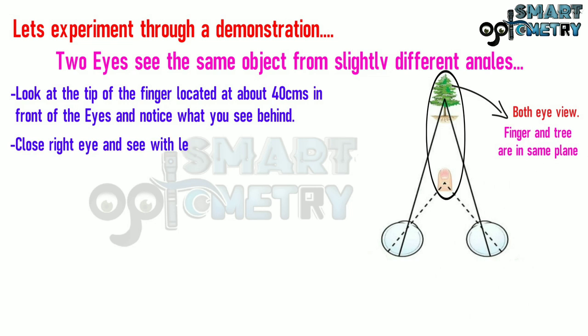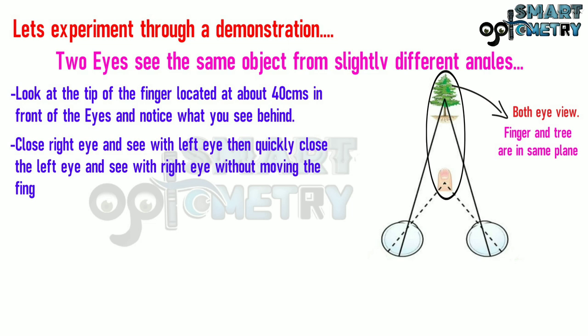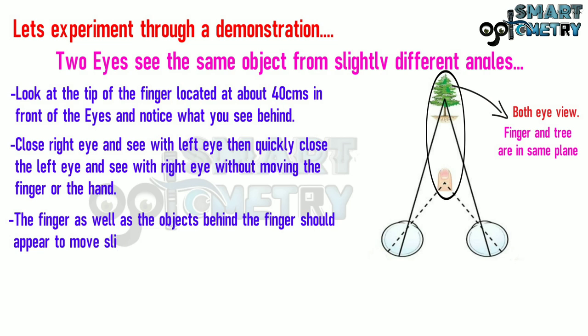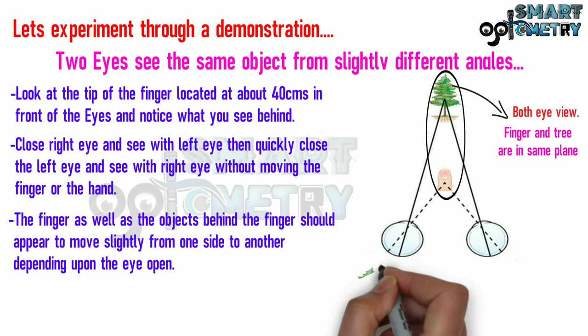Close your right eye and see with the left eye, then quickly close the left eye and see with the right eye. Without moving the finger or the hand, the finger as well as the objects behind the finger should appear to move slightly from one side to another depending upon the eye open.